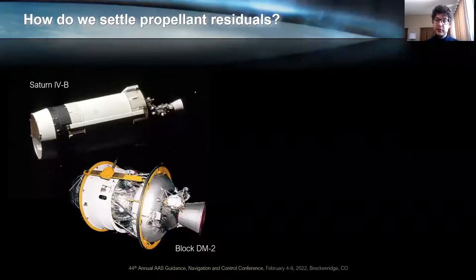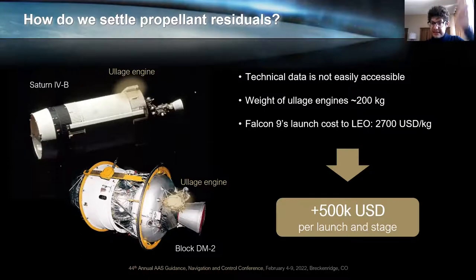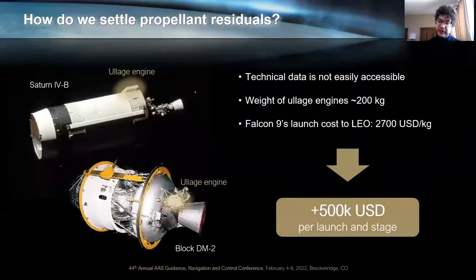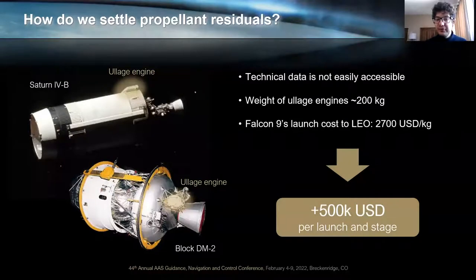For 60 years, our solution has been to employ what we call nowadays ullage engines. Ullage engines are an auxiliary propulsion unit that is in charge of inducing a small acceleration to the rocket in such a way that all those droplets settle back to the bottom of the tank. The technical data on these systems is not easily available. Only reports from the Apollo era can be found easily online. And it is very hard to make a technical assessment of their reliability and performance. What we know is that they weigh several hundred kilograms. And considering current Falcon 9's launch cost, here we are talking about half a million dollars per launch and stage. So this technology, even though it is robust and has been tested for a long time, is also very heavy, and it accounts for a significant economic penalty in every launch. So there is a strong economic motivation to figure out new ways to settle propellant in orbit.